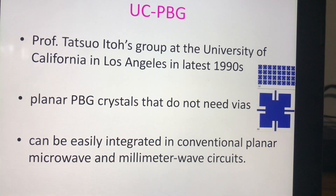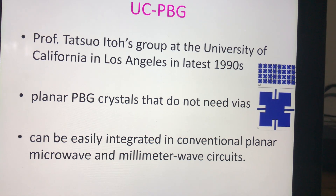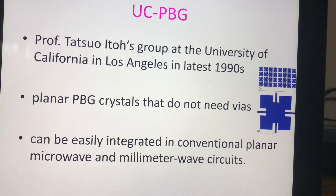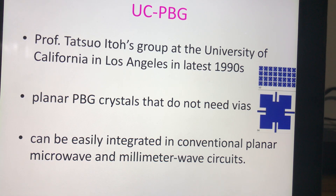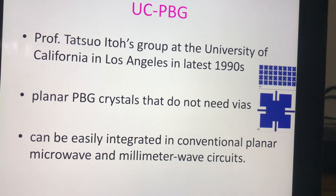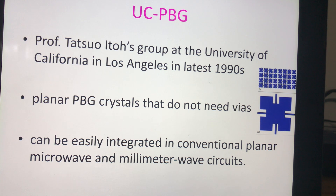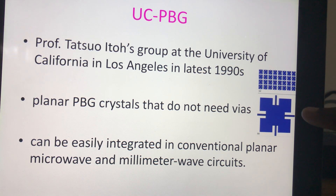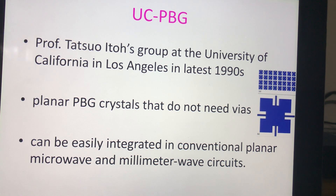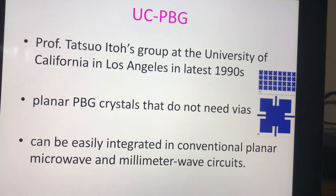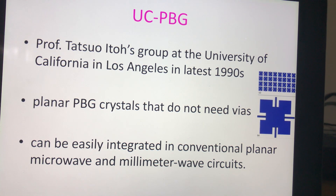The next structure is the UCPBG, normally called Uniplanar Compact PBG. This was also developed in the same period by ITO at the University of California. Its key advantage is that it has no vias — it is a completely planar structure. The extension portions provide inductance and the gaps provide capacitance, so it can also be represented by a simple LC equivalent circuit. It is widely used as frequency selective surfaces in the microwave and millimeter wave regions.